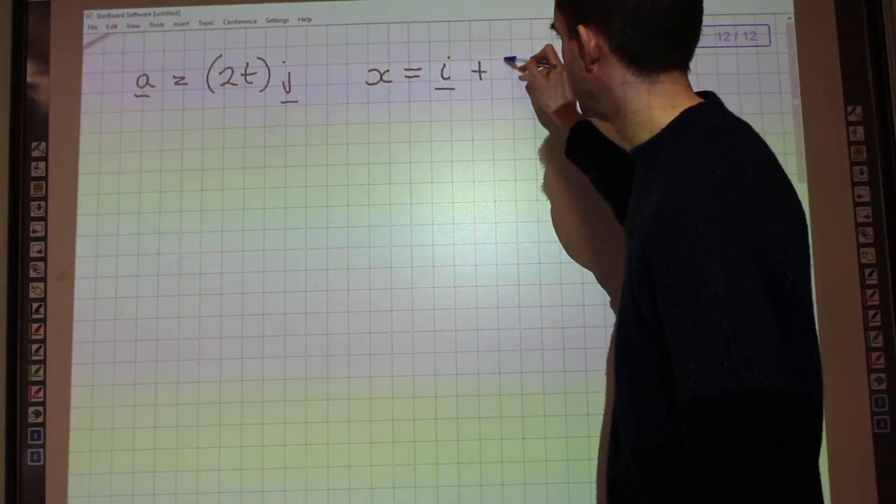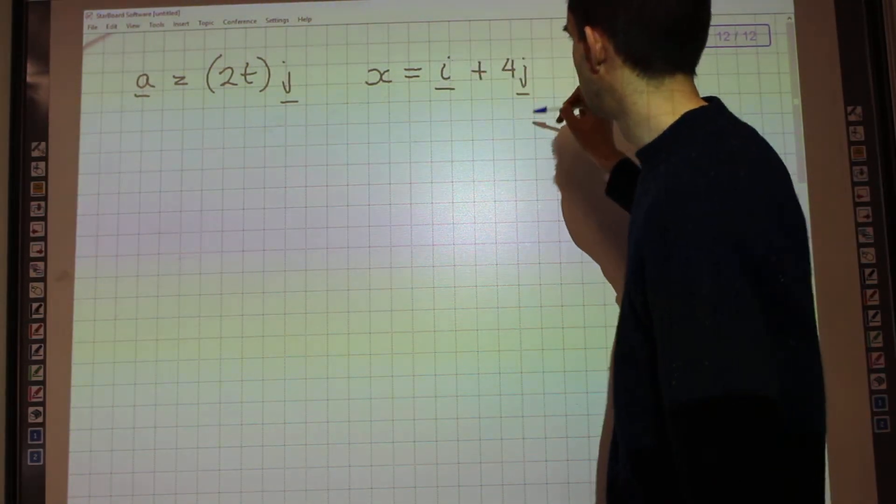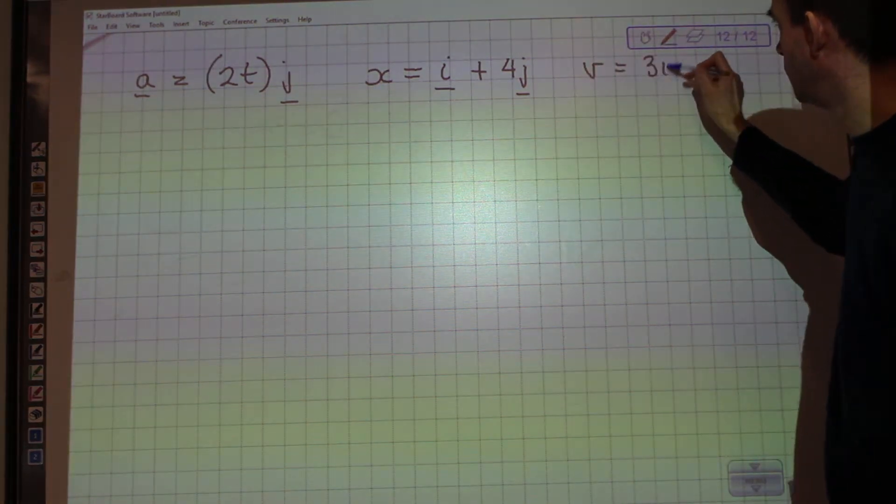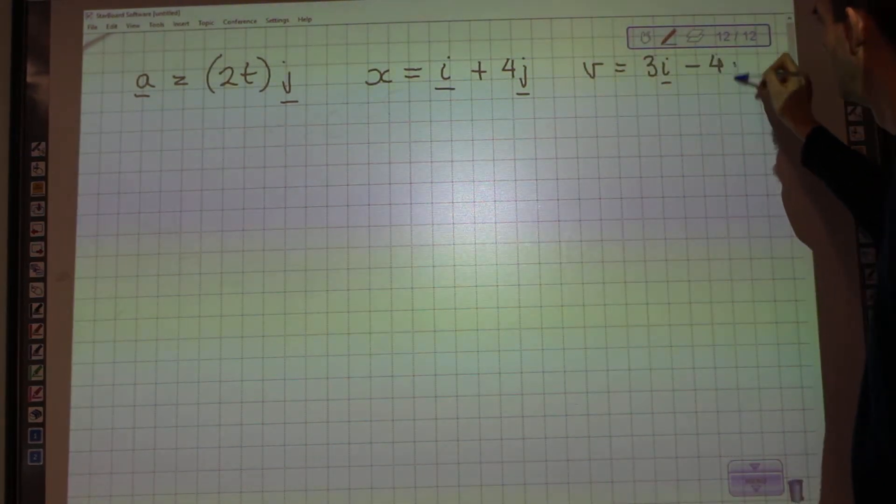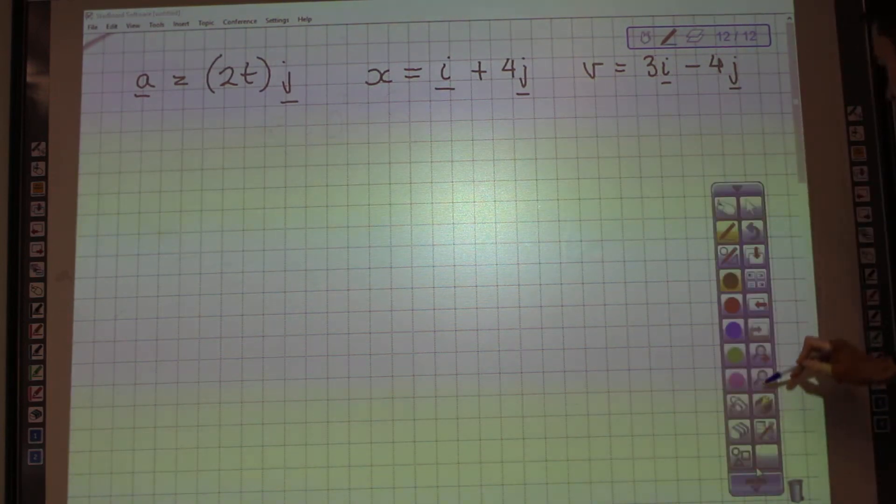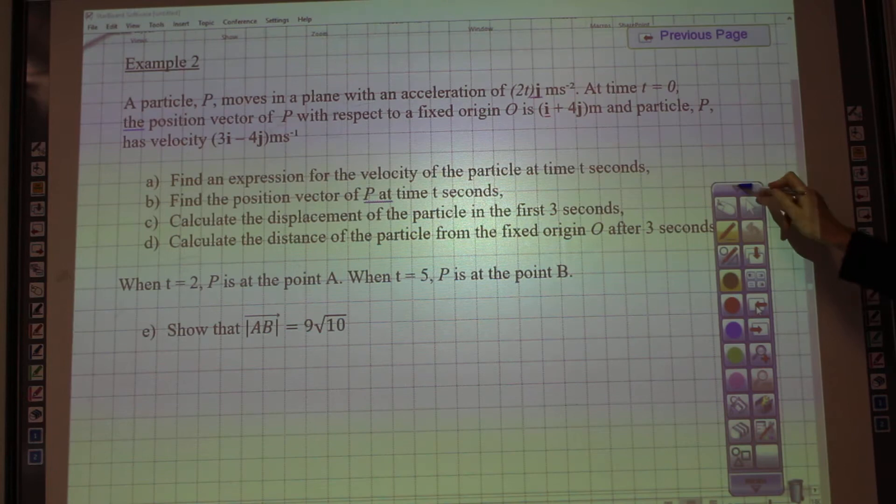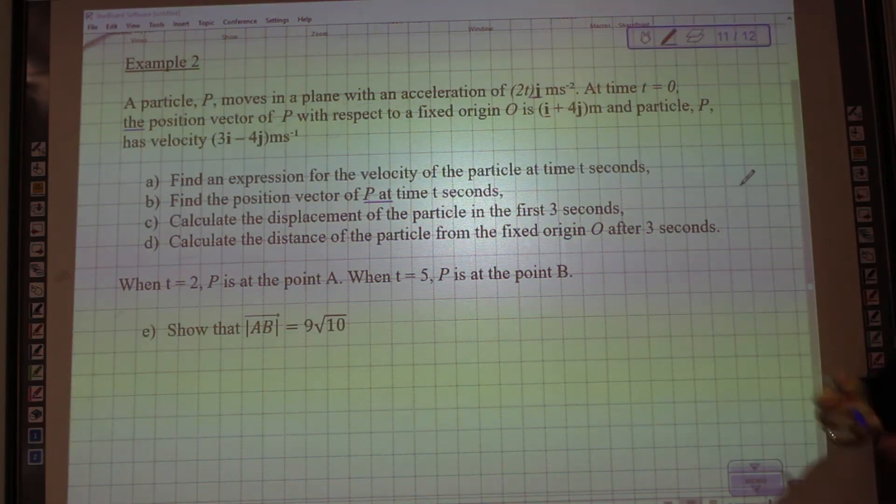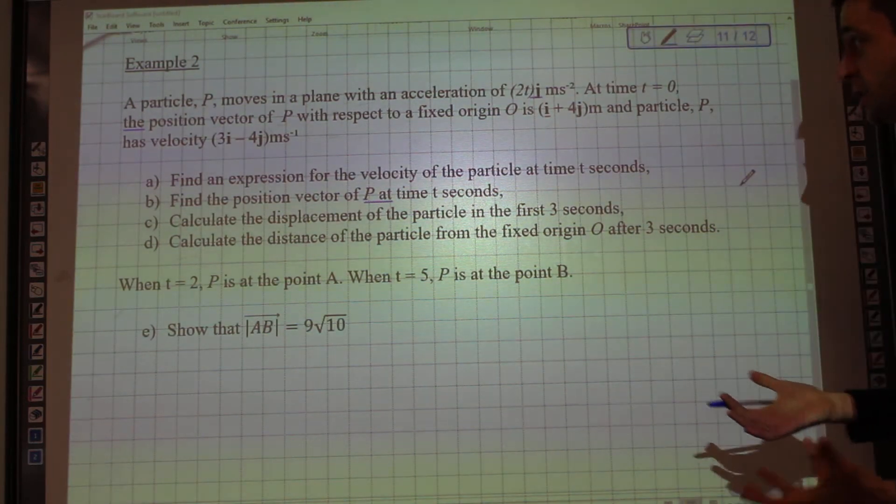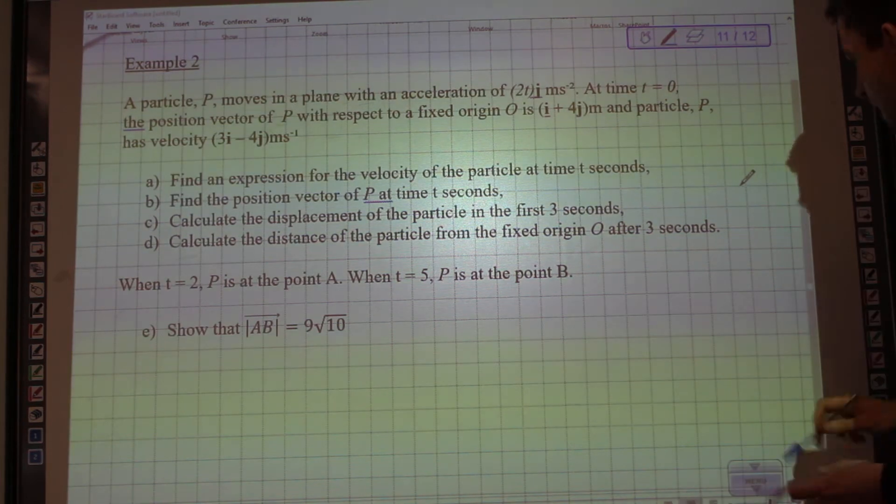So i plus 4j, and the velocity 3i minus 4j, I'm just going to check that. i plus 4j, lovely, cool. Right, and in part a we're asked to find an expression for the velocity of the particle at time t seconds.